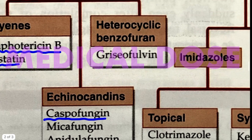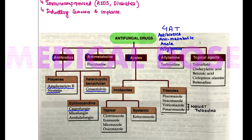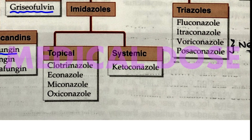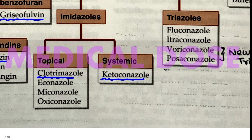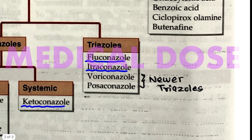Under antibiotics: amphotericin B, nystatin, caspofungin, and griseofulvin. Under azoles, the drugs include clotrimazole, fluconazole, ketoconazole, and itraconazole. Ketoconazole, fluconazole, and itraconazole are the basic ones to know. These are newer triazoles — these are newer azoles that you need to understand.